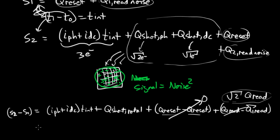But in any case, it's not zero. And then we can write our expression again. So the photo current plus I dc t int plus Q shot total plus zero plus some factor times Q read.